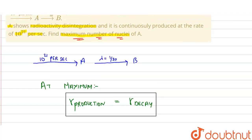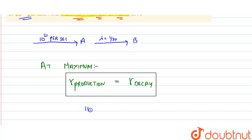Here, the rate of production is 10^21 per second. So we can write: rate of production equals rate of decay. The rate of decay is lambda times N, where lambda equals 1/30. Therefore, 10^21 equals 1/30 times N.